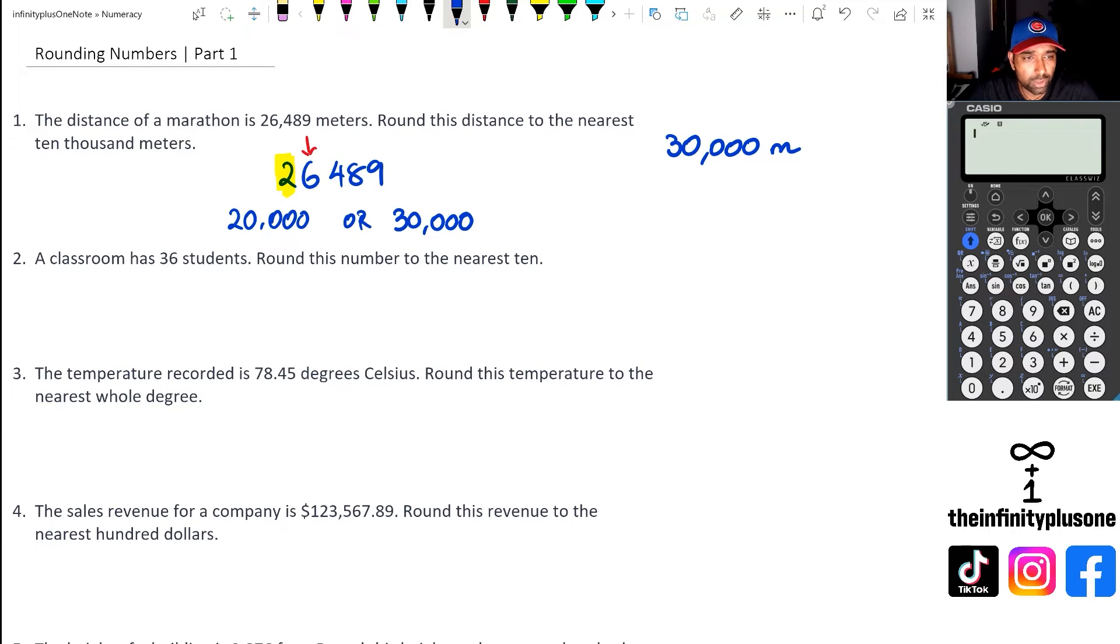Question two, we've got a classroom of 36 students and we are rounding this number to the nearest ten. Remember three is in the tens place value, so we've got two numbers that we could be looking at: the lower end would be 30 or the higher end would be 40. If you look at the number after the three, we are actually looking at a six, and we can say that 36 is actually closer to 40 compared to 30. So our answer for question two is going to be 40.